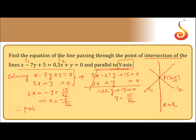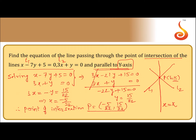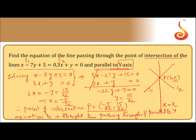So the point of intersection P equals (minus 5 over 22, 15 over 22), which is the common point of l1 and l2. Now the equation of the line passing through P and parallel to the y-axis is x equals minus 5 divided by 22.